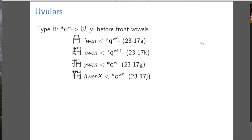We also have evidence for a labio-uvular. When you see a series that we'd reconstruct uvulars for because you have a glottal initial with contact with velar initials, but it's hook-O — meaning there are medial W's, one of those hook-O rhymes we'd normally reconstruct labiovelars for — we're going to reconstruct these as uvulars, not velars. So we reconstruct them as labio-uvulars.